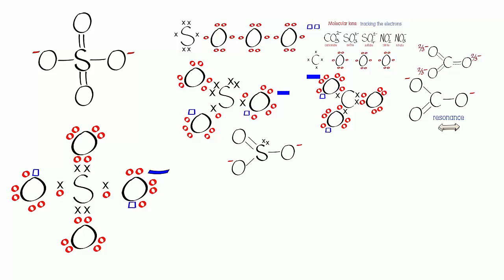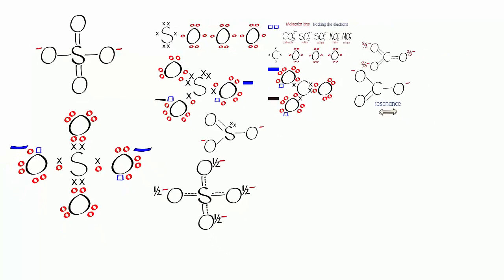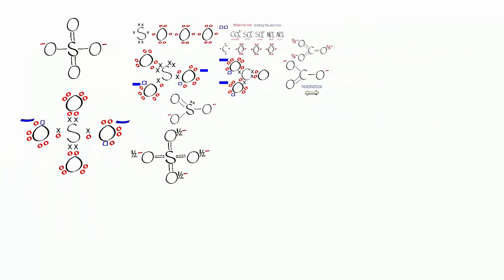In the sulfate ion, there are no lone pairs on the sulfur, though there are lone pairs on the oxygens. The minus charges are on the oxygens at the ends of the single bonds. Again there is resonance, with double and single bonds swapping around. You could represent it like that, where the two additional electrons are shared out between the four oxygens, represented by the dashed lines.